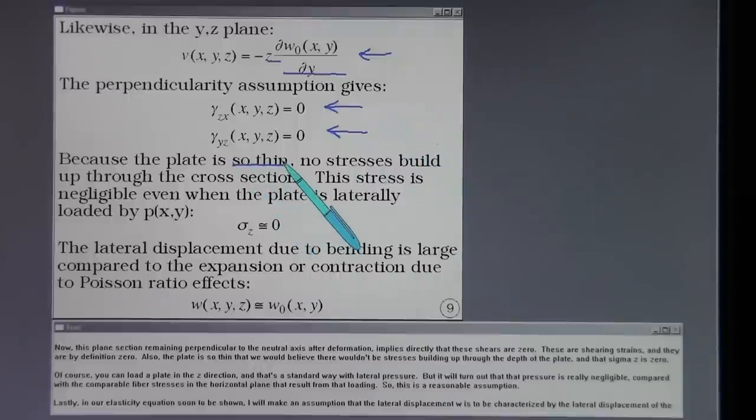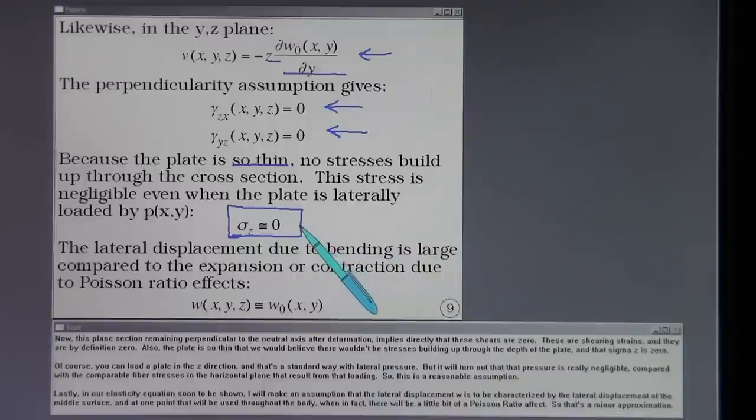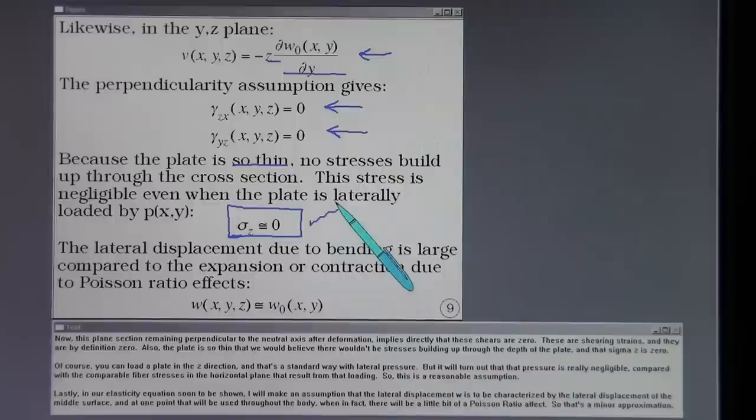Also, the plate is so thin that we would believe there wouldn't be stresses building up through the depth of the plate, and that sigma Z is zero. Of course, you can load a plate in the Z direction, and that's a standard way with lateral pressure, but it will turn out that that pressure is really negligible compared with the comparable fiber stresses in the horizontal plane, that result from that loading. So this is a reasonable assumption.